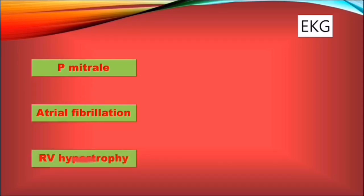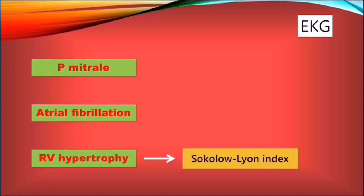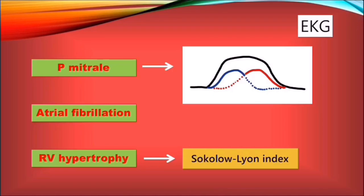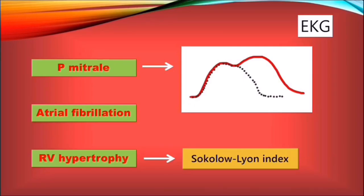Switching over to EKG, the most significant changes associated with mitral stenosis are P-mitrale, atrial fibrillation, and right ventricular hypertrophy, for which the Sokolov-Lyon index can be used. To better understand P-mitrale, let's look at the genesis of a normal P-wave: the two electrical vectors of the right atrium in blue and left atrium in red are not simultaneous but fused to form a larger singular P-wave, representing an overall positive electrical vector of atrial depolarization. In mitral stenosis, the left atrium presents with more muscular mass, which produces larger voltages and requires more time to depolarize. As a result, the left atrial component dominates the right atrium electrically, leading to a longer P-wave with the appearance of the letter M.